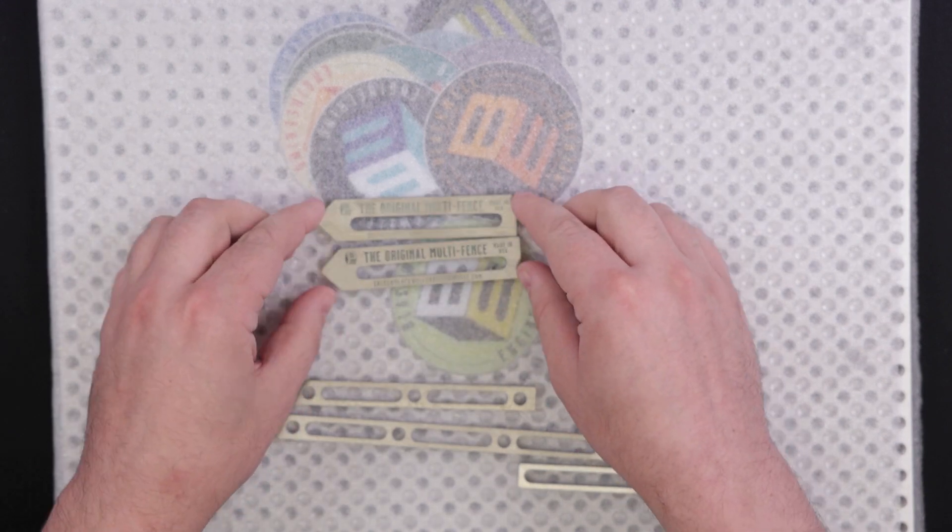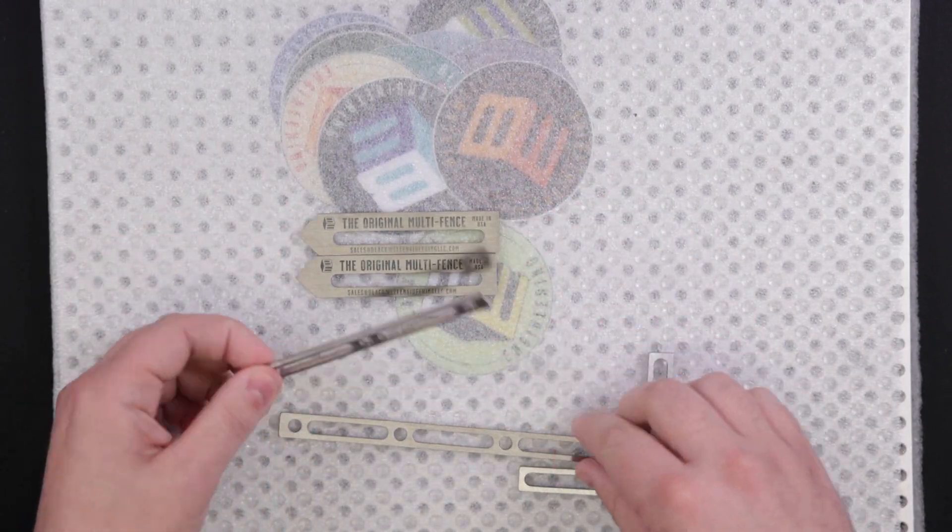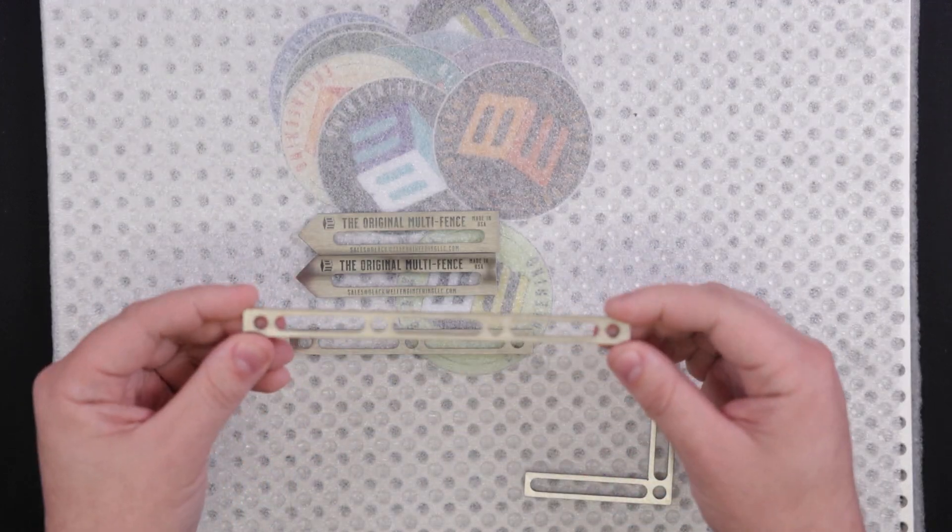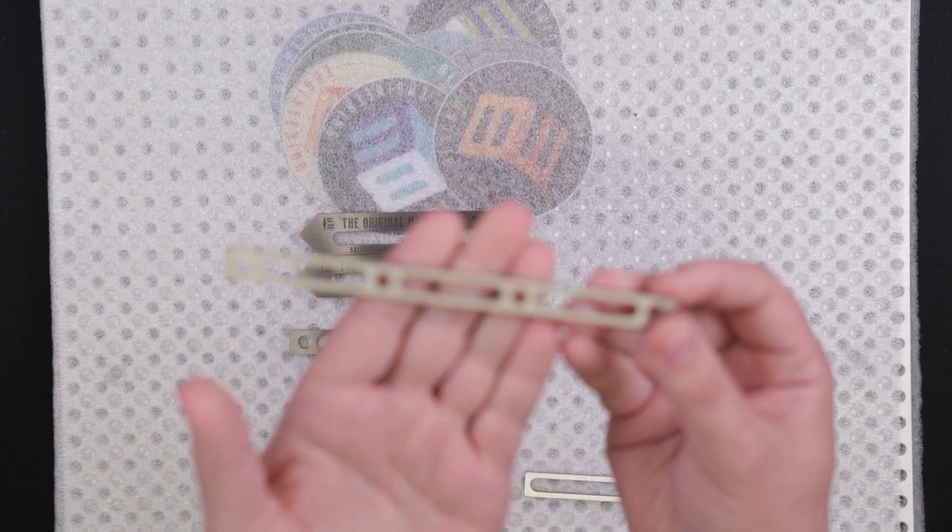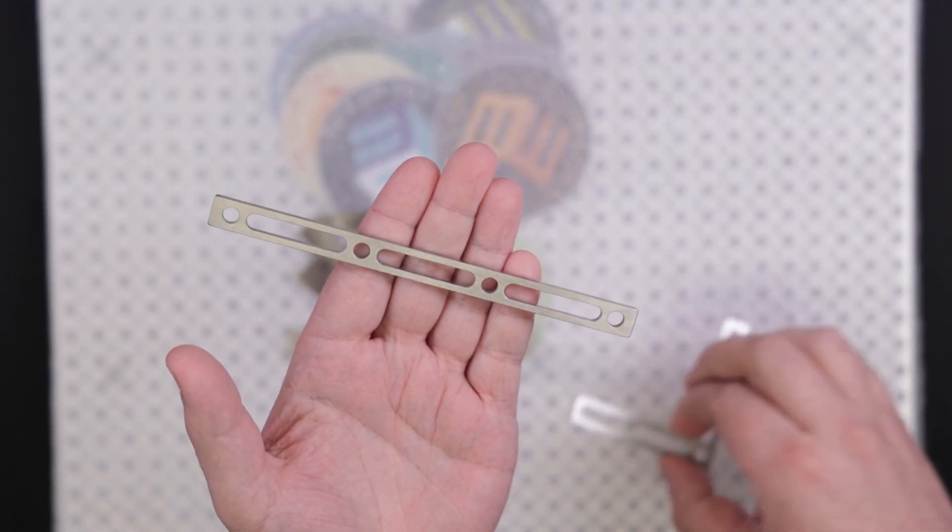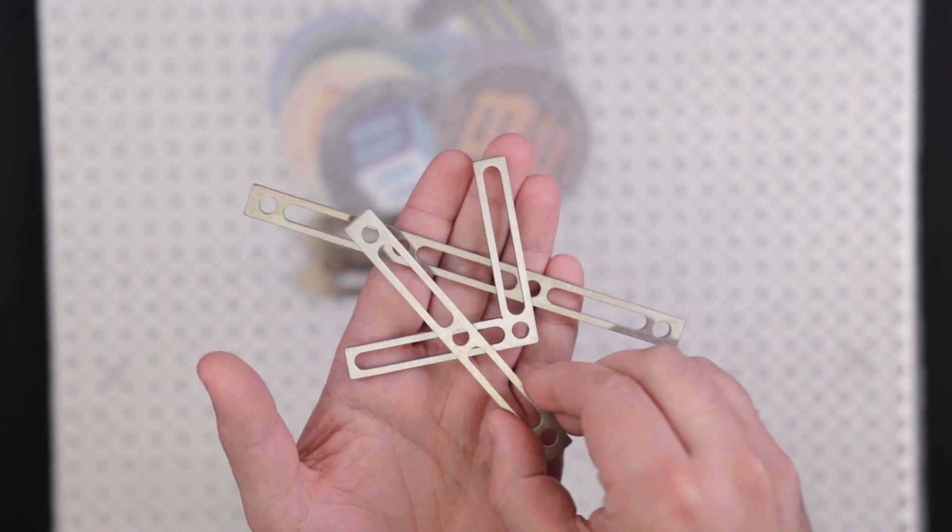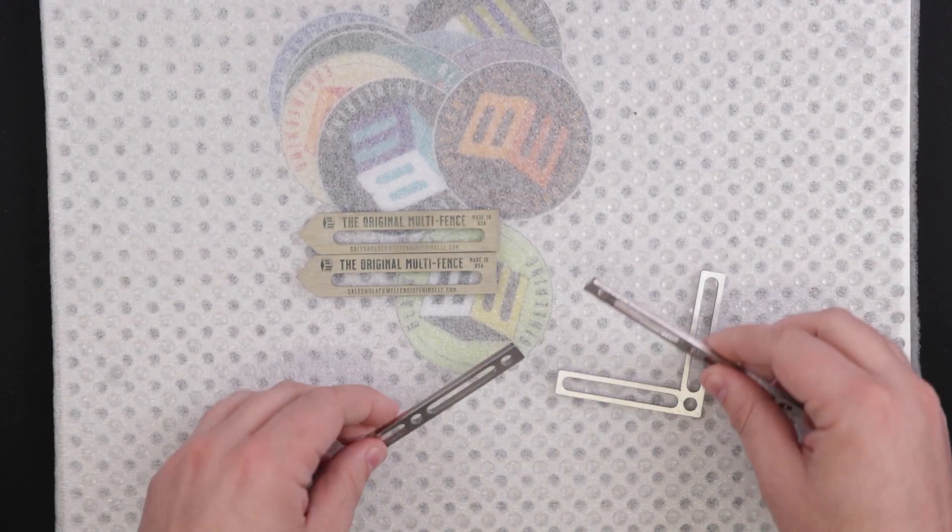So we have two variable adjustable fences here, and then some standard fence items that are definitely able to be adjusted and positioned in multiple different ways. Really nice parts on these. So we have a right angle there and a couple different straight edges. So these are all really nice pieces here.